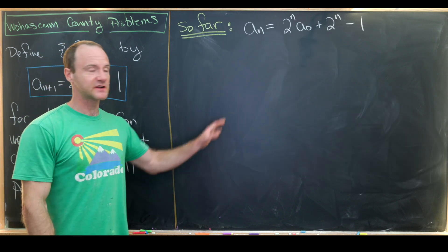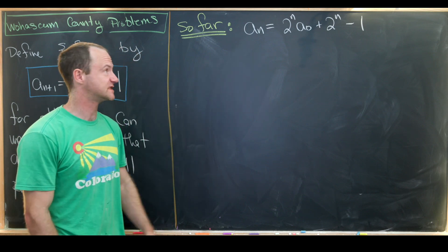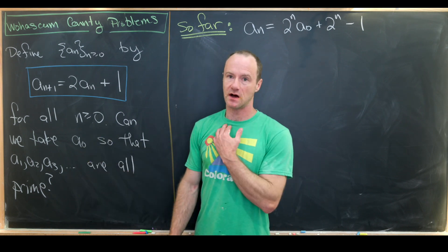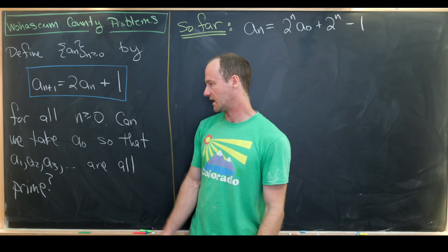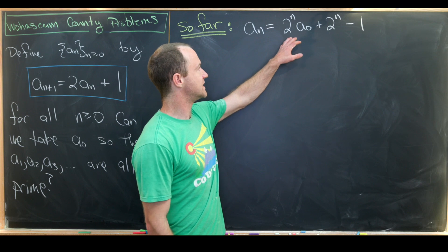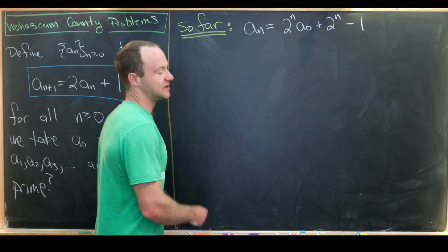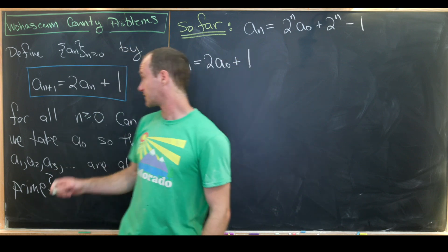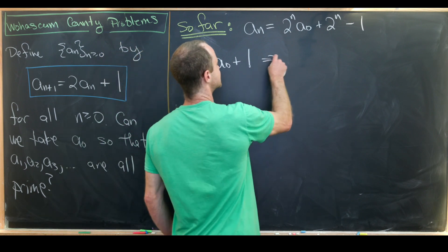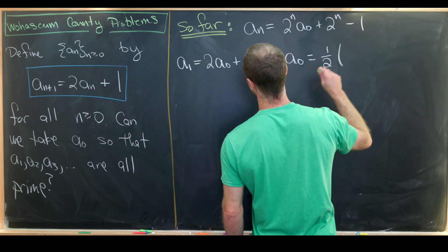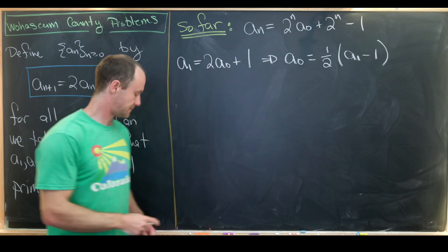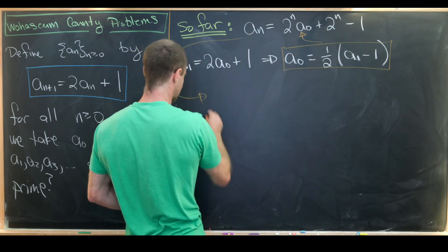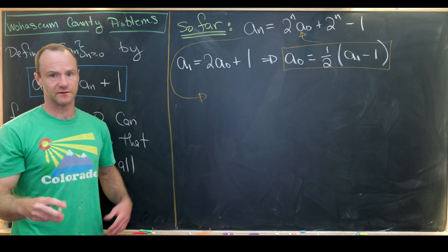We now have a closed form for the nth term in terms of a_0, the seed. Our goal is to pick a_0 so all terms from a_1 onward are prime, so let's re-express in terms of a_1. From the recursion at n equals zero, a_1 equals 2a_0 plus 1, which gives a_0 equals (1/2)(a_1 - 1). We can substitute this expression for a_0 into the closed form to get a_n in terms of a_1.